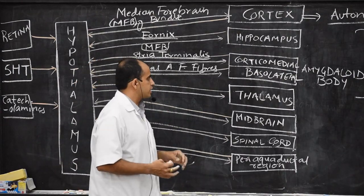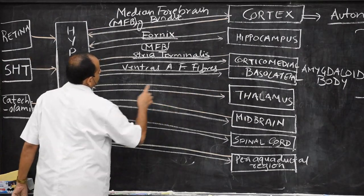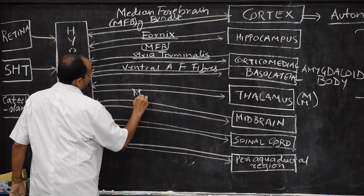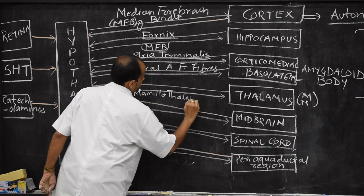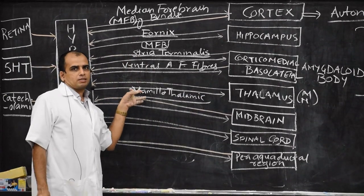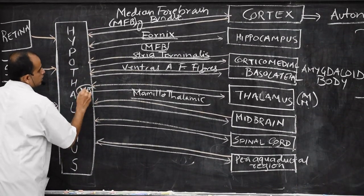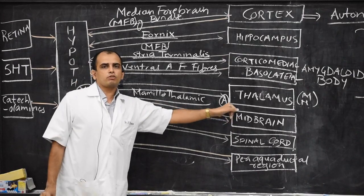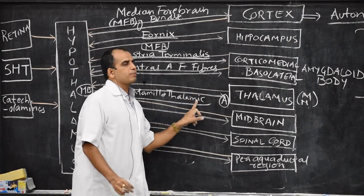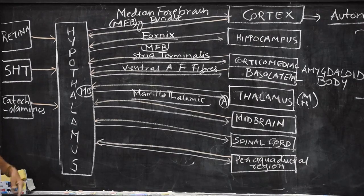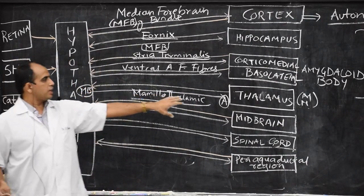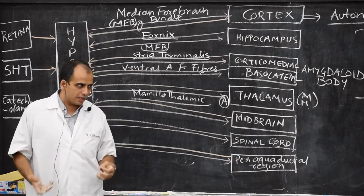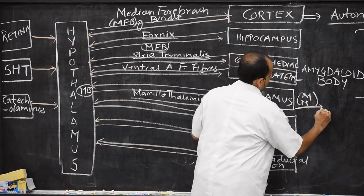The connection with the thalamus: afferent fibers from the thalamus come mainly from the medial and midline nuclei. The efferent connection is the very important mammillothalamic tract, which carries fibers from the mammillary body to the anterior nucleus of the thalamus. This is part of the Papez circuit and is responsible for forming long-term new memories. The thalamus connection also explains why somatic pain affects food and water intake.